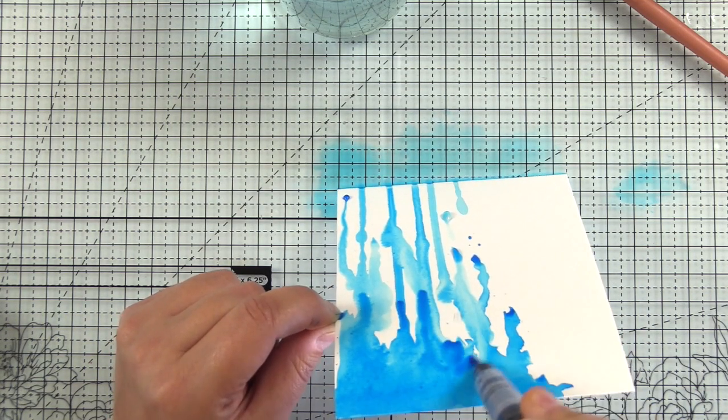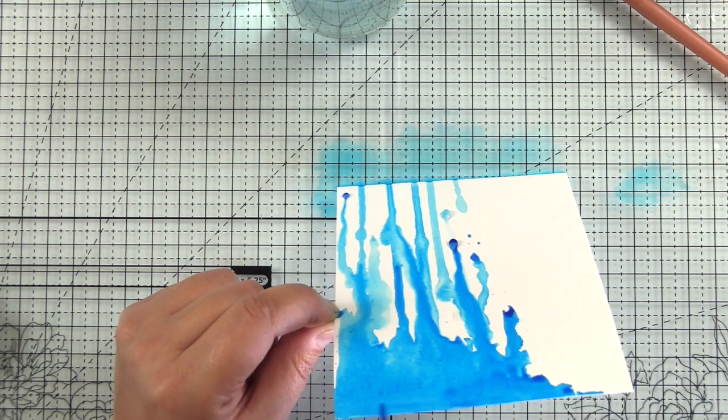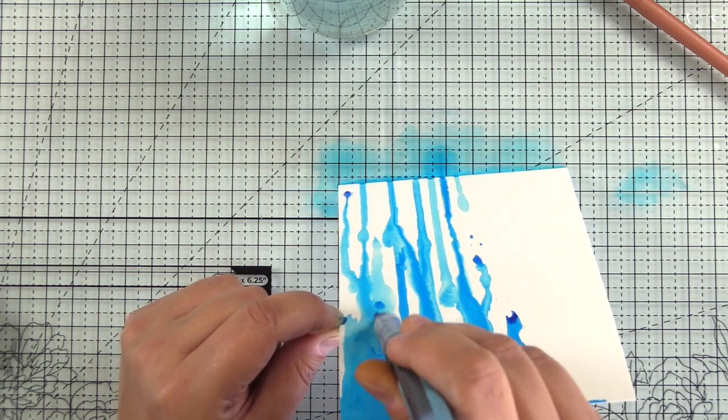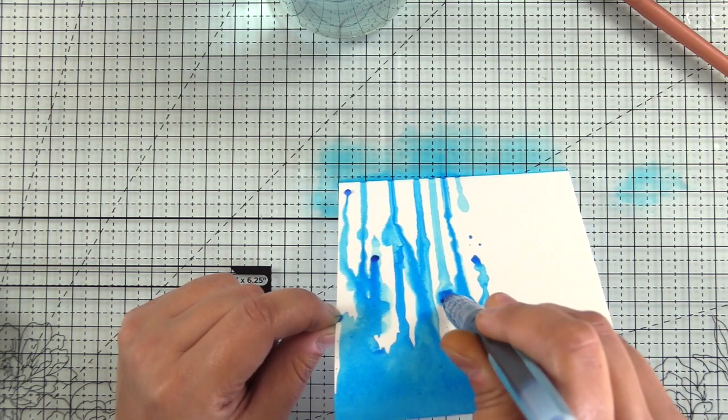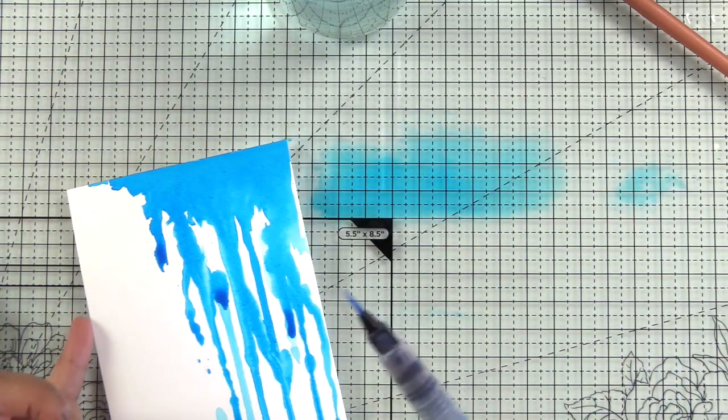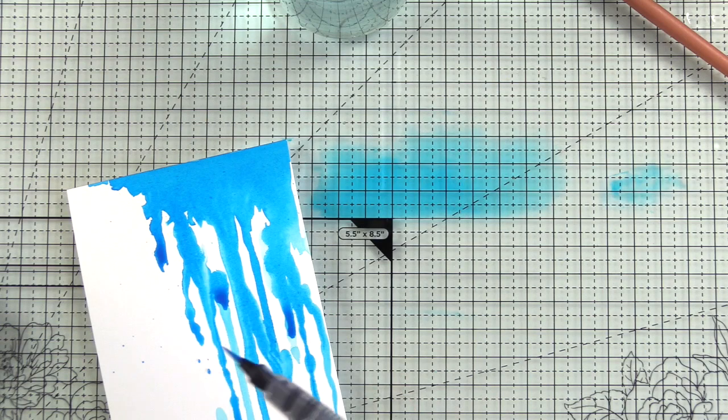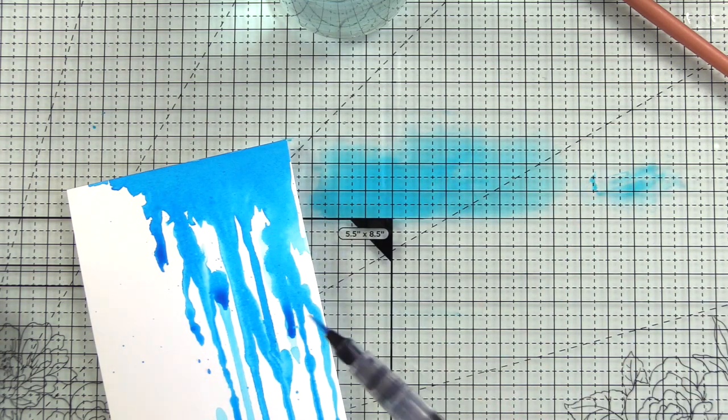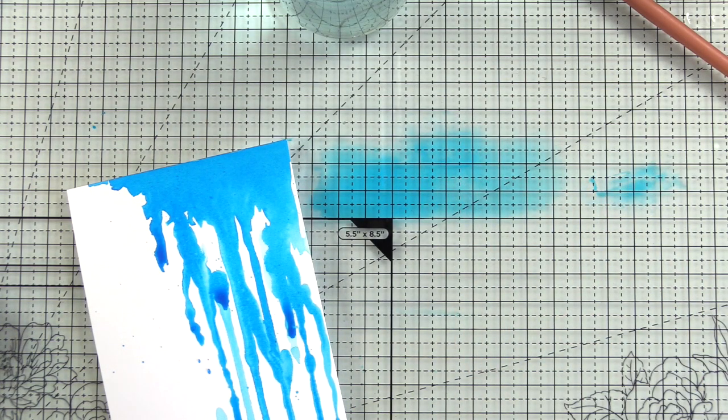And then as a last step I'll come back in with the watercolor brush marker and just squeeze out more pigments. You can also use your brush marker refills for this as well, so you don't need to use the brush. You could also use the refills and just drop on pigment that way as well.